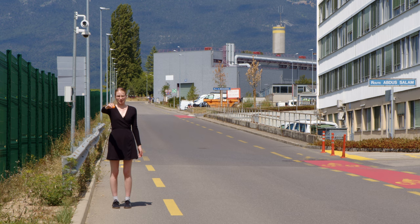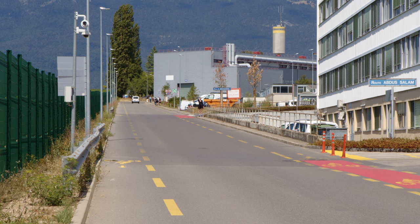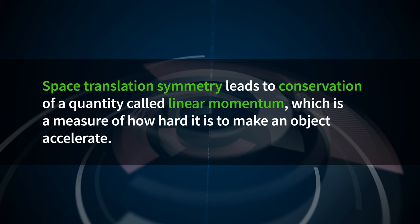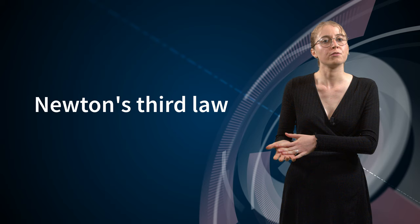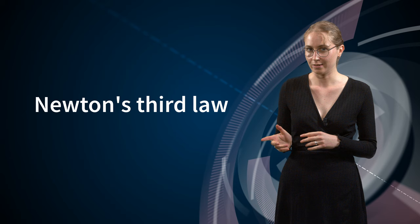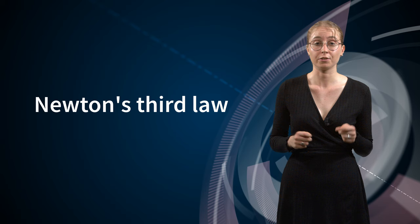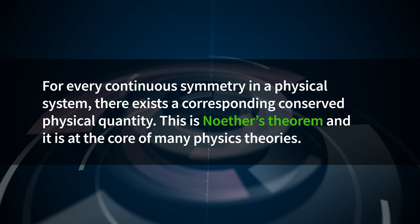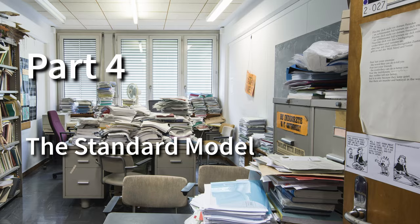That's also why, whether I drop this ping pong ball here or all the way over here, we know that we can use exactly the same equations to analyse its motion. Space translation symmetry leads to conservation of a quantity called linear momentum, which is a measure of how hard it is to make an object accelerate. You may have heard of Newton's third law, which says that for every action there is an equal and opposite reaction. This law actually comes about as a direct result of the conservation of momentum.